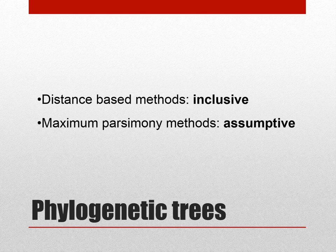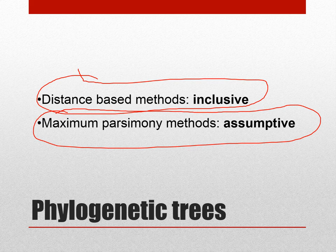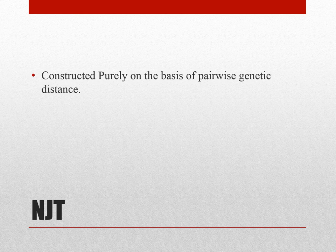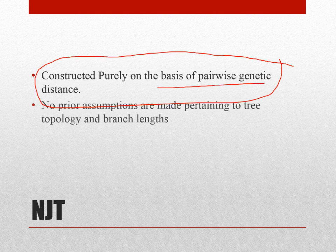There are two basic methods when constructing phylogenetic trees. You have distance-based methods, which are all-inclusive, or maximum parsimony-based methods, which are assumptive — you assume a certain pattern conforms to a certain structure of the tree. The neighbor joining tree is constructed purely on the basis of pairwise genetic distance. There is no bias, but also no prior information — you basically download the sequences and compare them, with no prior assumptions regarding the topology and branch lengths.